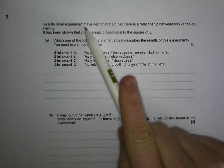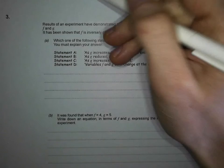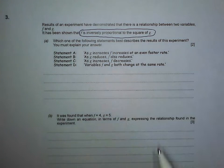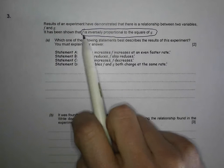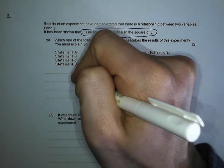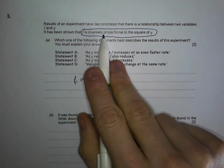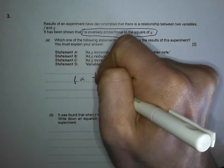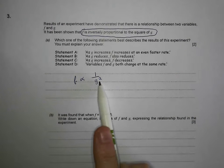Results for an experiment have demonstrated there is a relationship between two variables f and g. It has been shown that f is inversely proportional to the square of g. Which statement best describes the results? Let's get our head around this. I'm going to write that down: f is proportional to, but it's inversely, so it's going to be 1 over the square of g, otherwise known as g squared.